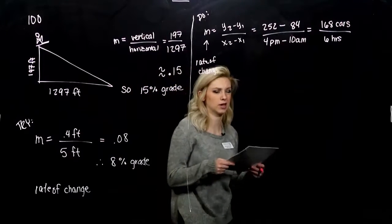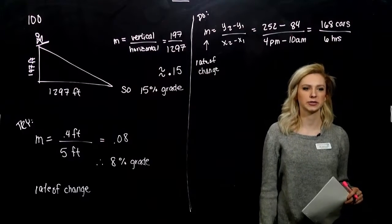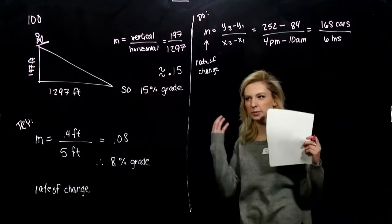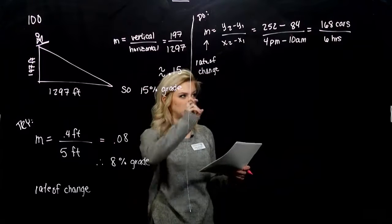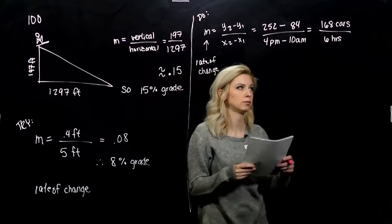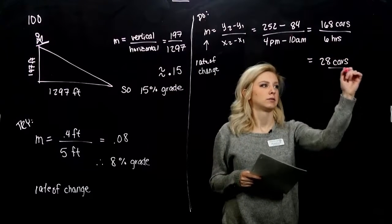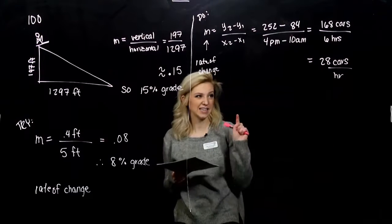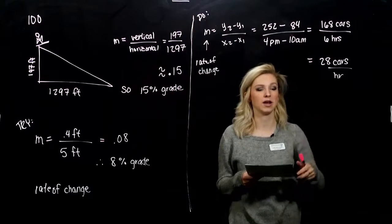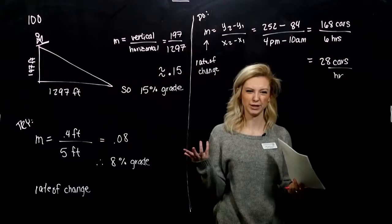But does that really give us a rate per hour? No. If you're going to go to your boss and say we make 168 cars per 6 hours, it's not very to the point and takes a little bit of thinking. So we want to kind of unitize this and make it cars per 1 hour. So if we do the division, what are we talking about? 28 cars per hour. So now that it's in that rate of change form, my production rate, you could say, hey, how many cars am I going to make in 2 hours? Multiply it by 2, easier to work with.